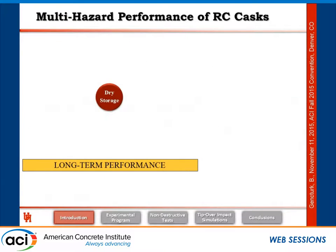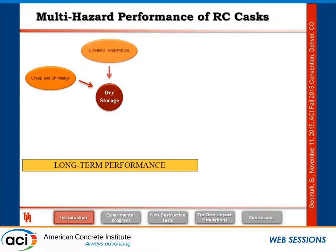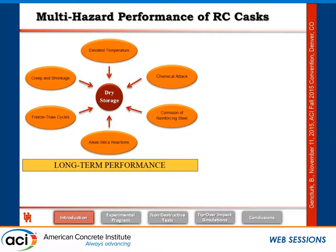These dry cask structures are licensed for 20 years with a potential extension of another 20 years, giving an expected lifetime of about 40 years. But since there is no permanent storage facility in the United States, and none is expected for the next 40–50 years, these dry cask structures will likely be in operation for more than 100 years. When discussing such long durations, the question of long-term performance becomes important. For concrete casks, the long-term mechanisms include creep and shrinkage, elevated temperature, chemical attack, freeze-thaw cycles, alkali-silica reactions, and corrosion of reinforcing steel.